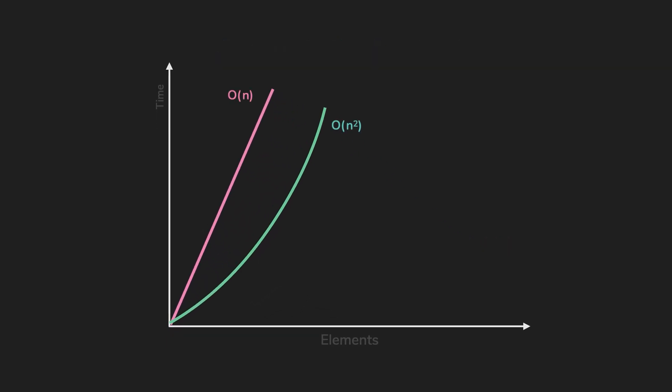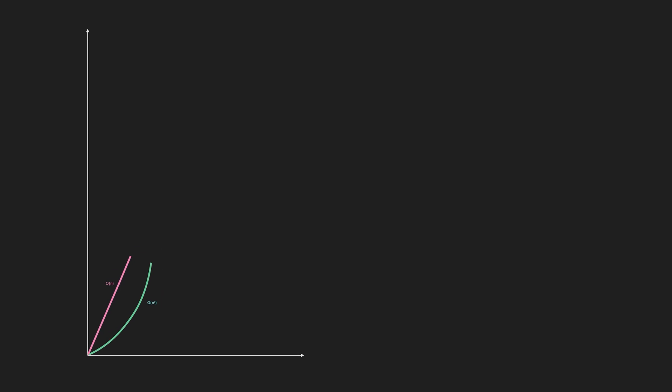As we put in a larger input, coefficients and constants in the function will become less significant. When we were running the linear complexity algorithm in a slower computer, we were changing the coefficient. But as the input size grows, you can see that it doesn't matter at the end.